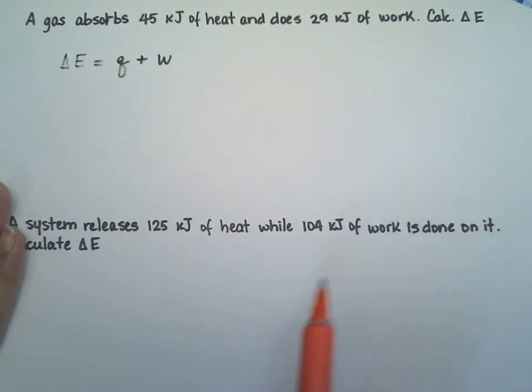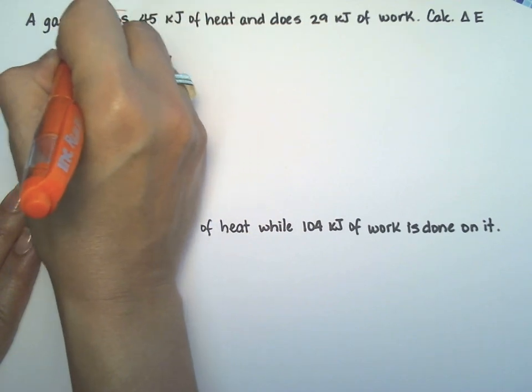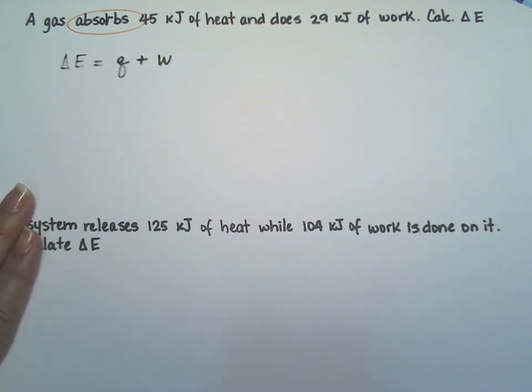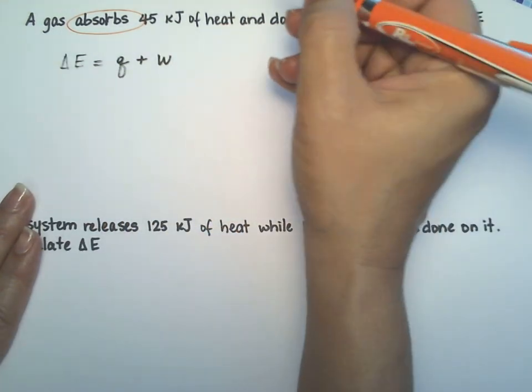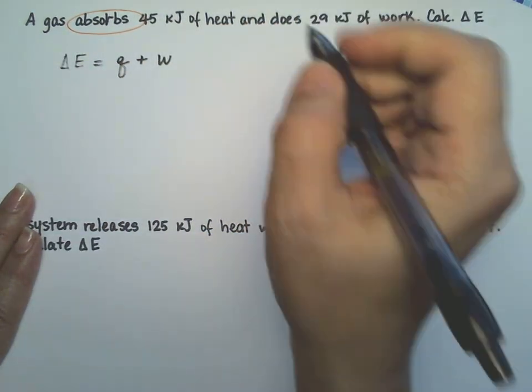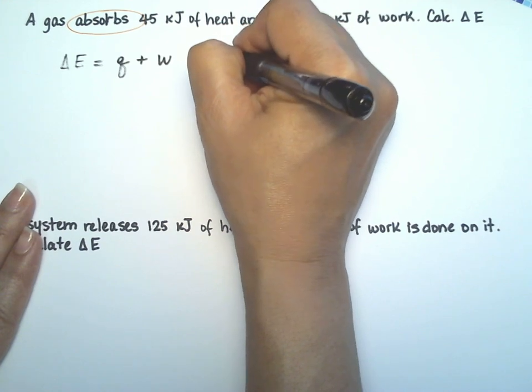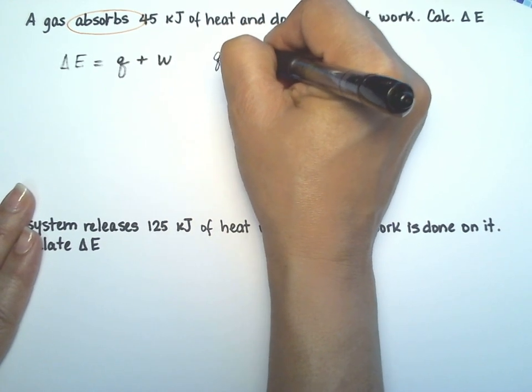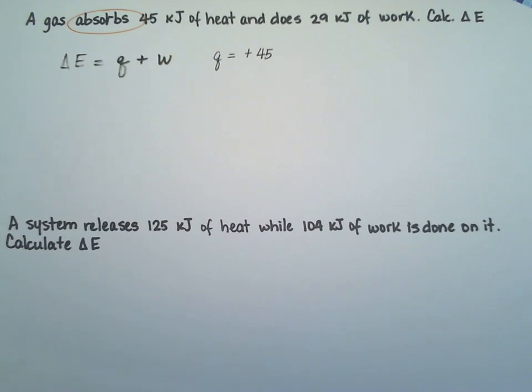So what do they tell us? They tell us that the gas is absorbing 45 kilojoules of heat. That means that heat is going to be a positive number because it's absorbed by the gas.